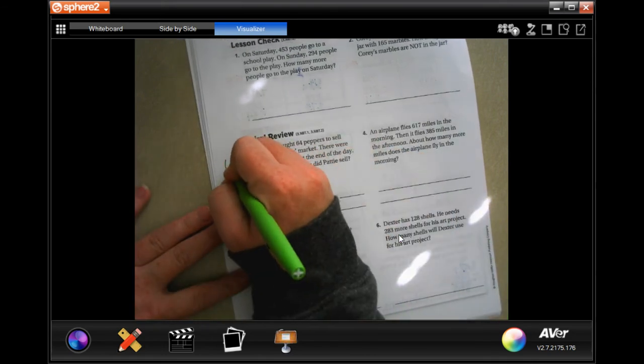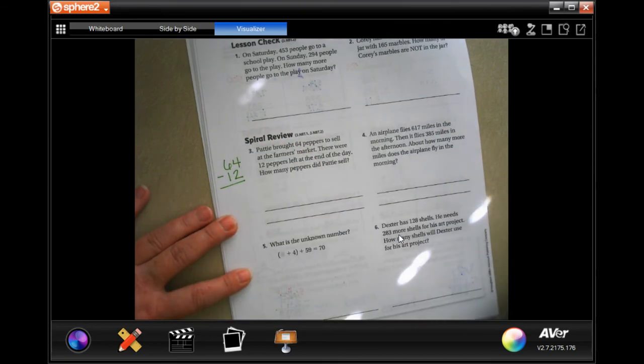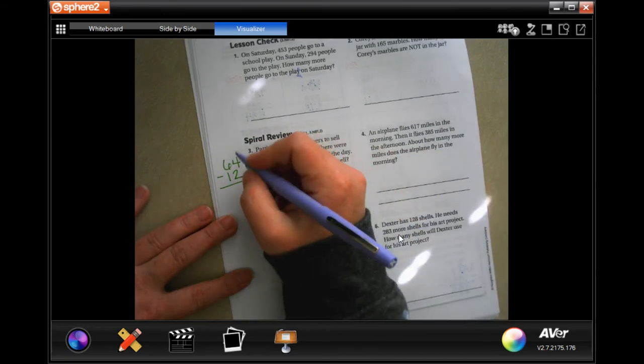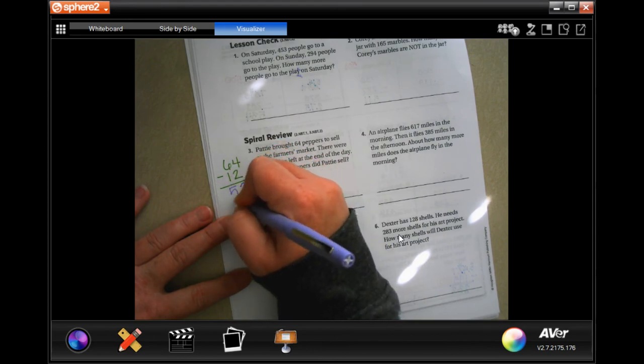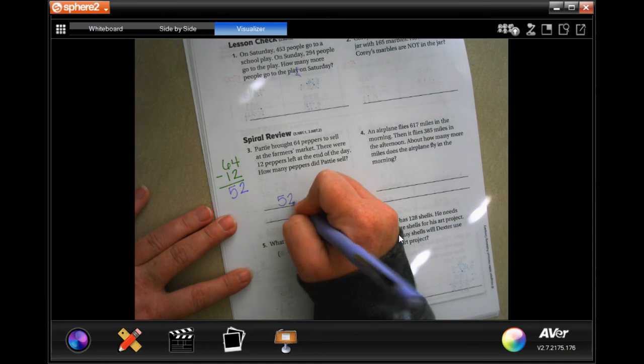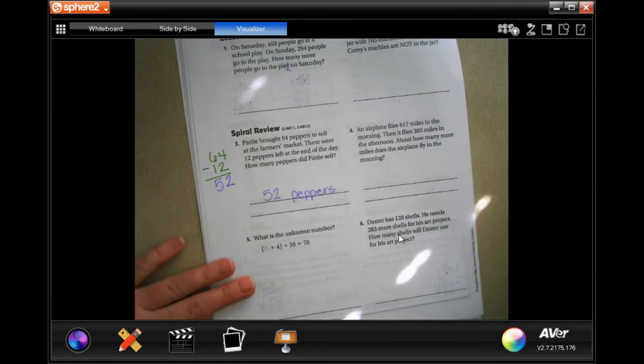Well, that's easy because you're going to do 64 and you're going to take away what she has left and you're going to get how many she sold. So, 4 minus 2 is 2 and 6 minus 1 is 5. So, 52 peppers.